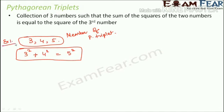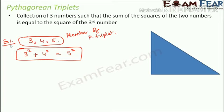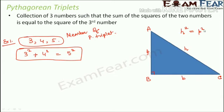Now let me explain how this relates to the Pythagoras theorem. The Pythagoras theorem holds true only for a right-angle triangle. In triangle ABC, where AB is the perpendicular, BC is the base, and AC is the hypotenuse — the side opposite the right angle — the square of the hypotenuse equals the sum of the squares of the perpendicular and the base. This is exactly the same relationship as the triplet concept.